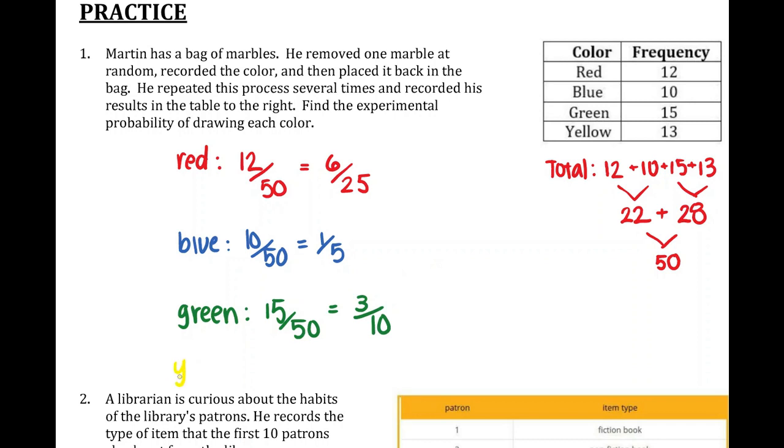Yellow was chosen thirteen out of the fifty times, and that cannot be reduced. Thirteen is prime.